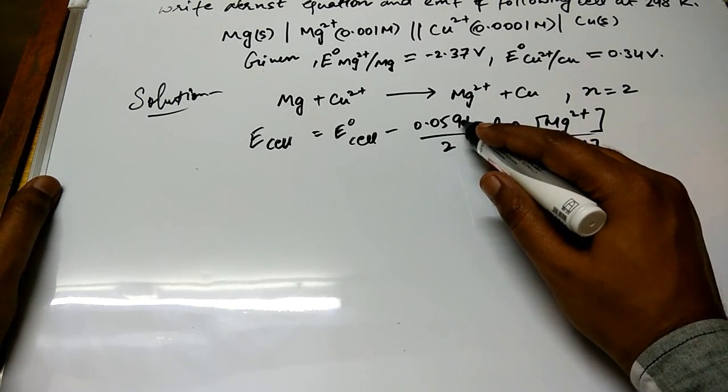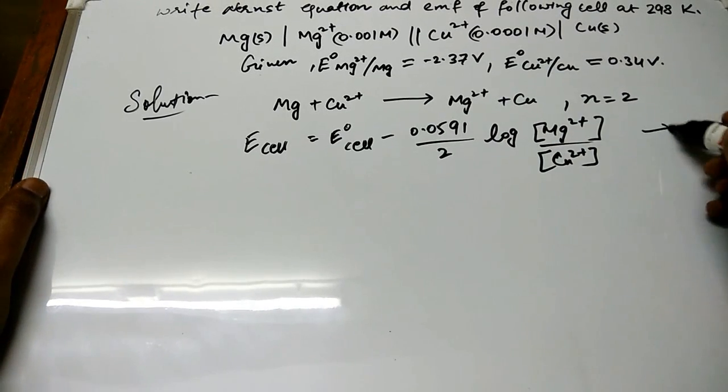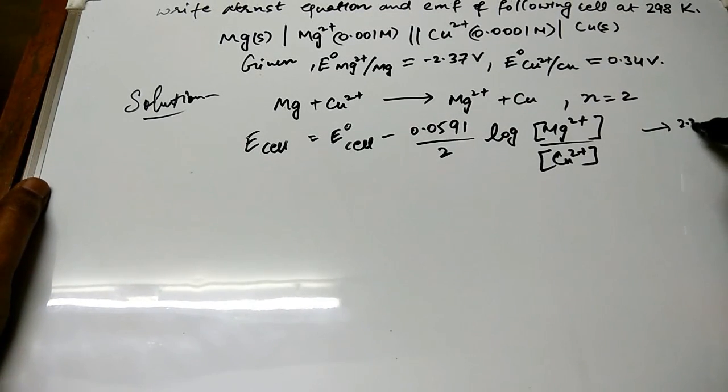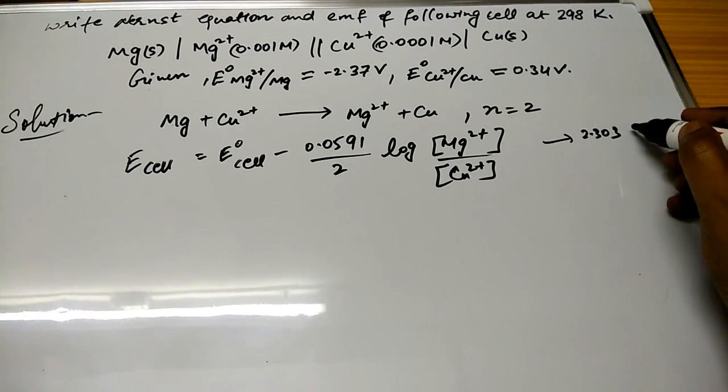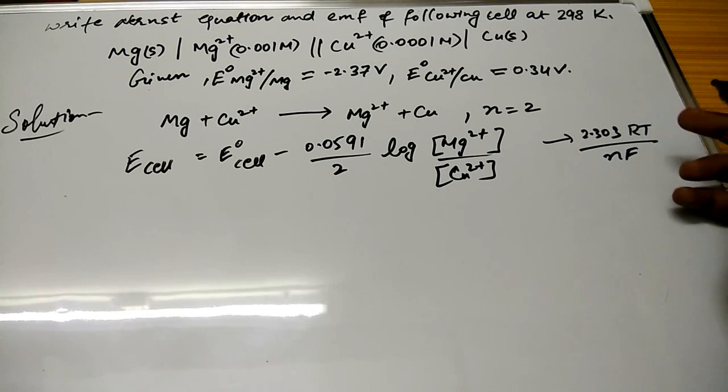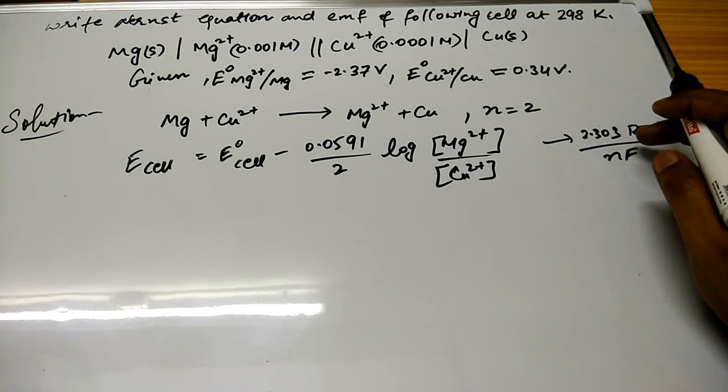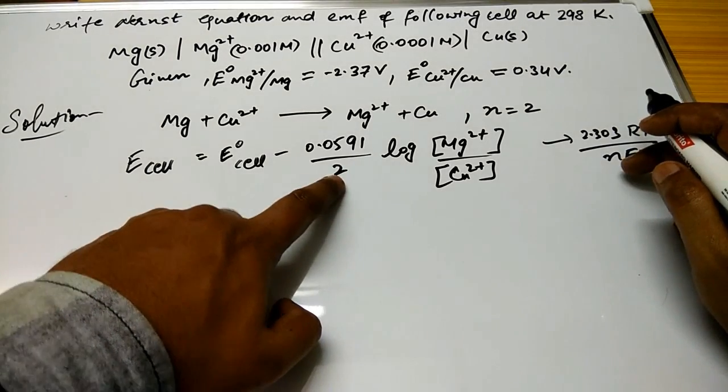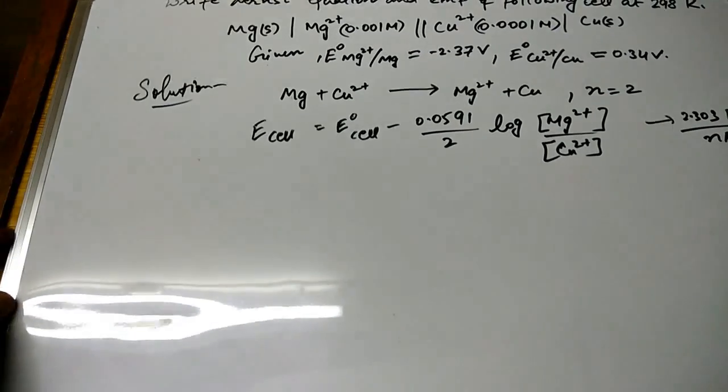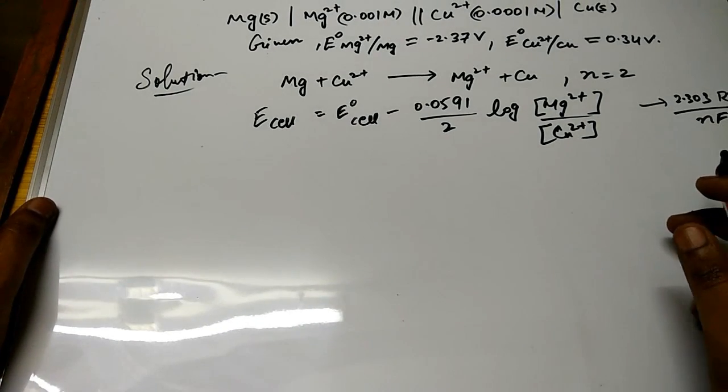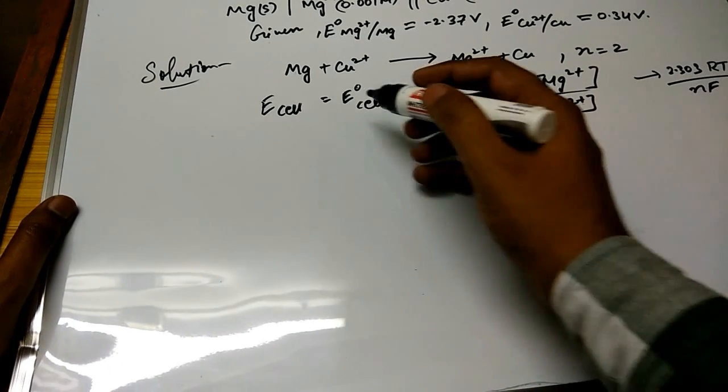So here let me once again tell you that here the value will be 2.303 RT/nF, where we put the R and T and F values respectively to get 0.0591, and the 2 value is of n only. So this is complete Nernst equation for the given problem.